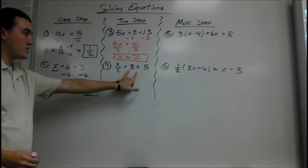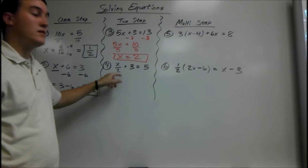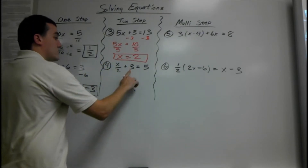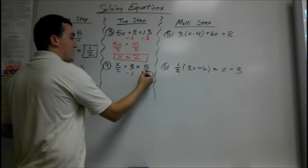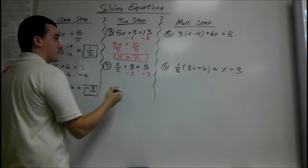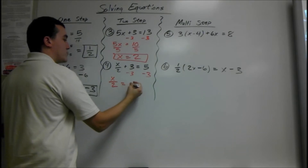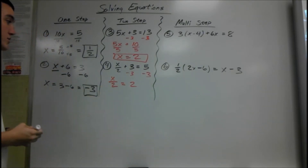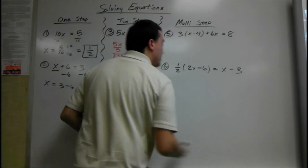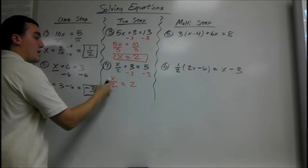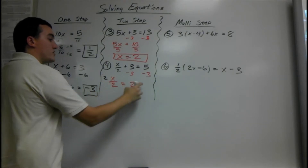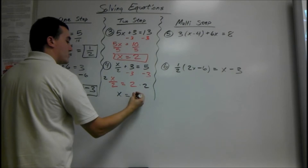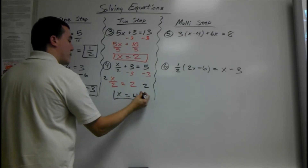Last two-step equation — same thing, isolate the term with the x in it. So x over 2 has to be by itself before we do anything else. So we minus 3 from both sides, since it was positive 3. We get x over 2 equals 5 minus 3 is 2. And since we are dividing by 2 here, to get rid of it we want to multiply by 2. You do the opposite to get rid of something. If you do it on one side, you have to do it to both sides. x equals 2 times 2 is 4.